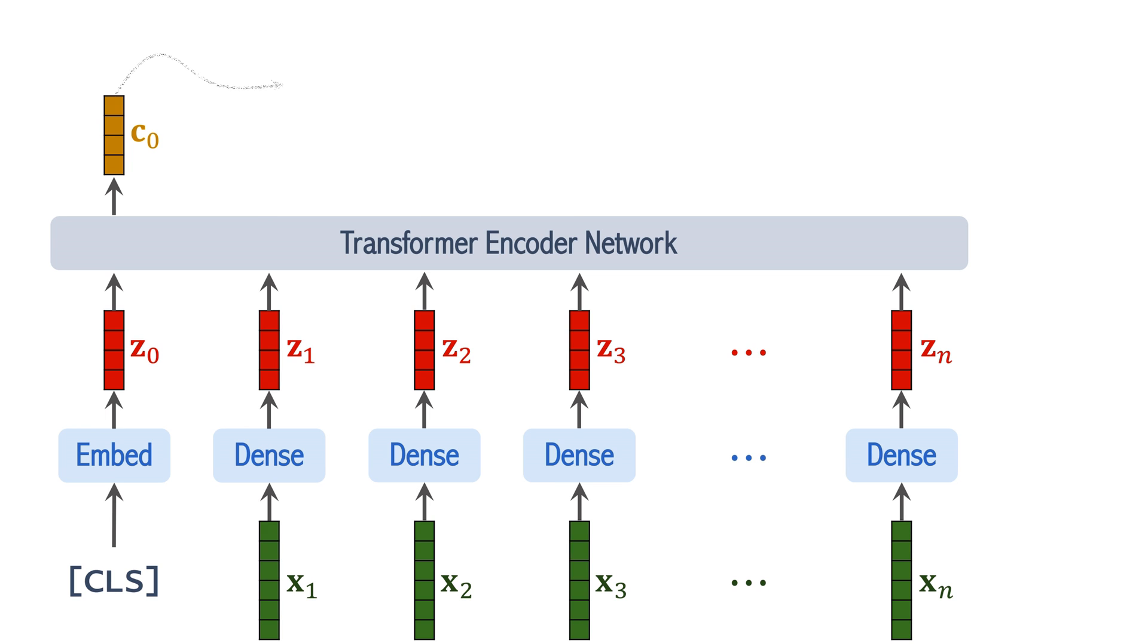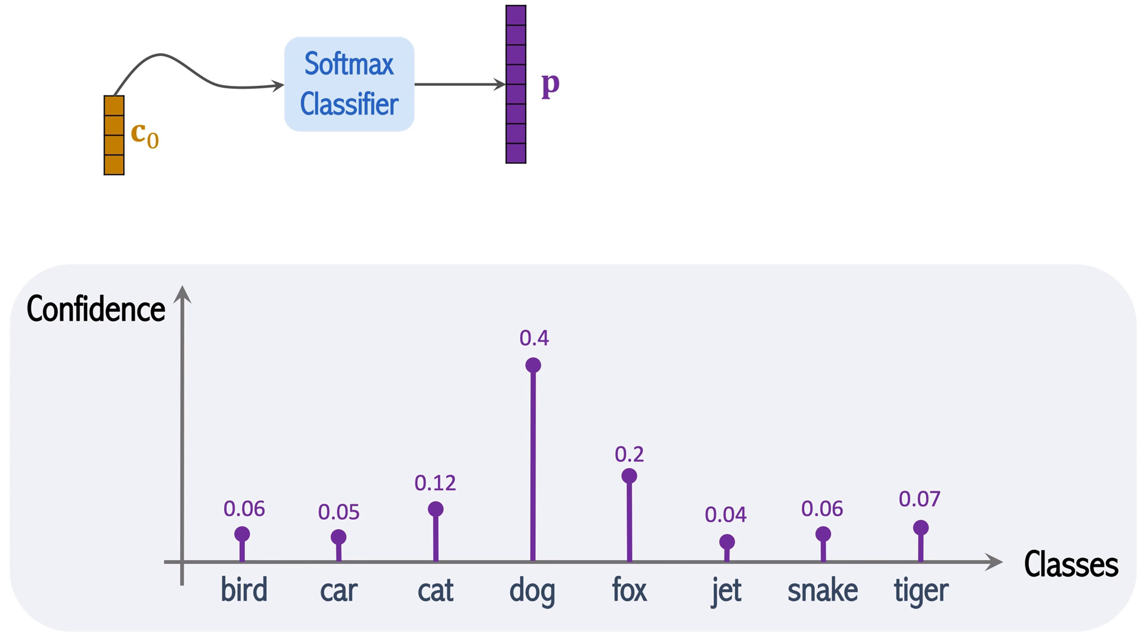Feed c0 into a softmax classifier. The classifier outputs vector p. The shape of p is a number of classes. If the dataset has 8 classes, then p is 8-dimensional. This example shows the elements of vector p. They indicate the result of classification.